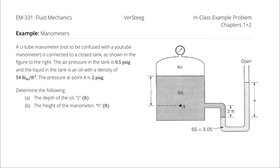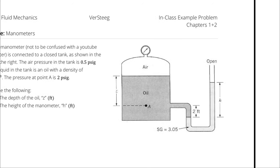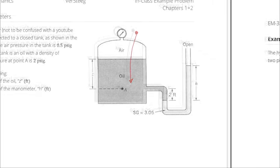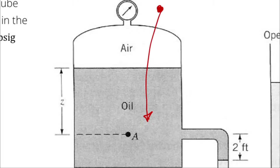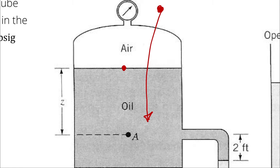We can approach this in two ways — that's why we have a Part A and a Part B. You can think of it as working from atmospheric pressure in to point A through the air gauge and the height Z, indicating the height difference of the oil between A and the top of the oil, which is the interface between oil and air. For convenience, I'll call this point alpha.